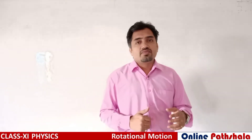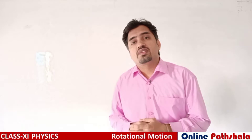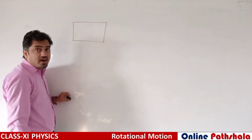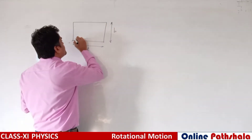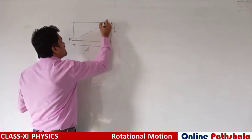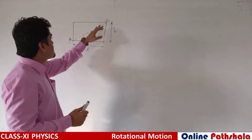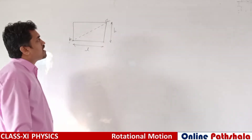In this lecture, we are finding the moment of inertia of a rectangular lamina about its diagonal. In the last lecture we found the moment of inertia of a square lamina about its diameter, but in this lecture we are talking about a rectangle. Let us consider a rectangle where the length is L and the width is B. We have to find the moment of inertia of this rectangular lamina rotating about the diagonal AC.